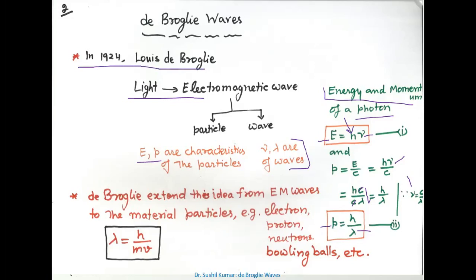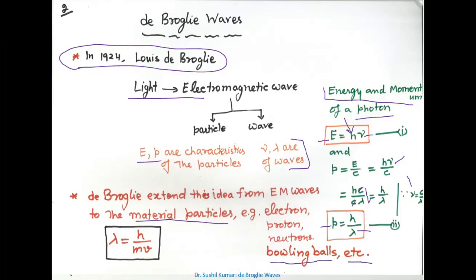Louis de Broglie suggested or extended this idea for material particles — like electron, proton, neutron, or any materialistic particles such as bowling balls. Any material particle will be associated with a de Broglie wavelength lambda, equal to h upon mv, where m is the mass of the particle, v is the velocity, and h is Planck's constant. This is the extended idea of the de Broglie wave for materialistic particles.